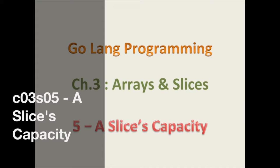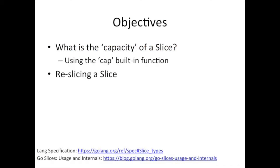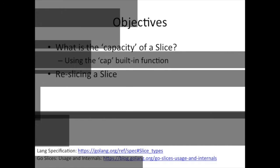Good day and welcome back. Today we're going to be looking at the capacity of a slice — one of those things we didn't really talk about when we first introduced slices in the previous video. Now we're in a position to look deeper into the internals of a slice and see how capacity plays into being able to re-slice a slice. This also sets us up for looking at how to dynamically create slices, append them, copy them, and combine slices. So let's look at the code.